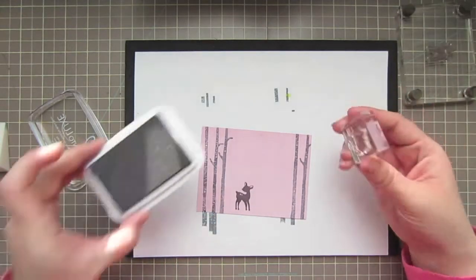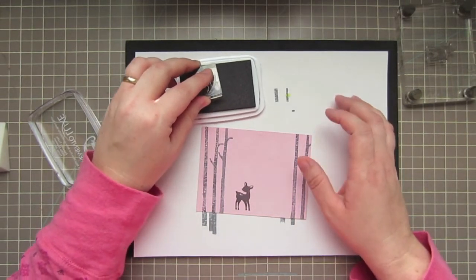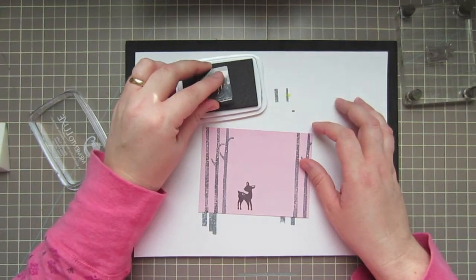Now I'm going to take the little skunk and do the same thing, trying to create a little scene from Bambi with Bambi and Flower, his little skunk friend.